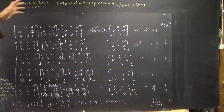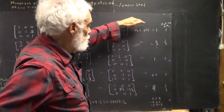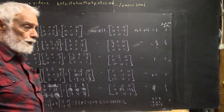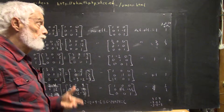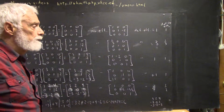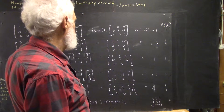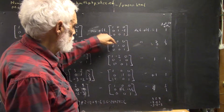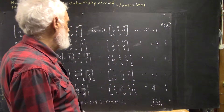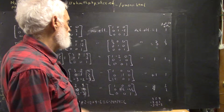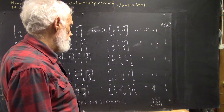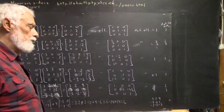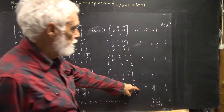The other thing we list is the determinant of each elementary matrix. The determinant of an elementary matrix is always really, really easy. In fact, for any elementary matrix, the determinant is just the product of the diagonals. But you have to do that somewhat carefully to make sure you understand it.